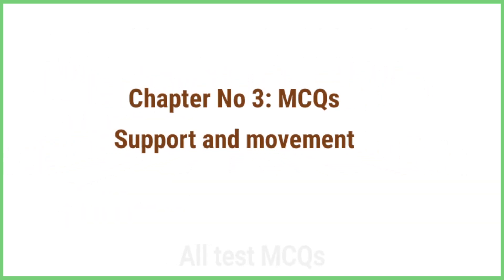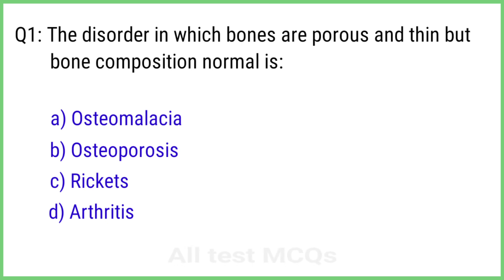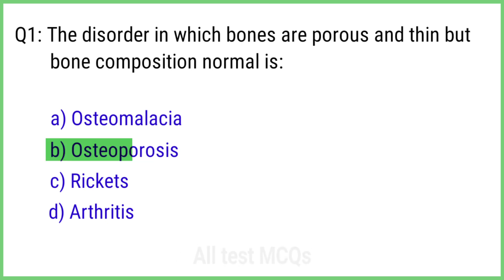Chapter 3: Support and Movement. Question 1. The disorder in which bones are porous and thin but bone composition is normal is? The right answer is option B: Osteoporosis.